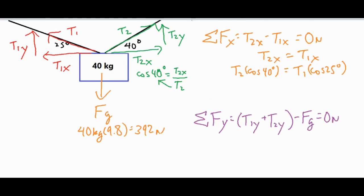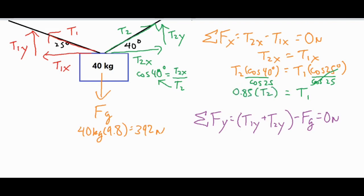We can solve for either T1 or T2; I'll solve for T1. Dividing both sides of T2x = T1x by cos(25°), we get T1 = cos(40°) / cos(25°) × T2, which gives a coefficient of 0.85. So T1 = 0.85 × T2 — we now have T1 in terms of T2 for later substitution.